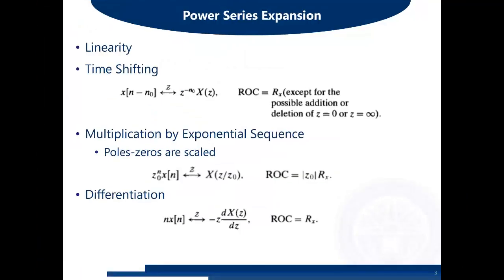If you multiply the time domain sequence x(n) with the time index n, the consequence in the Z-transform domain is that you have to take the derivative of the Z-transform and multiply it with minus Z. The ROC will not be changed — it is unchanged. You just have to take the derivative.